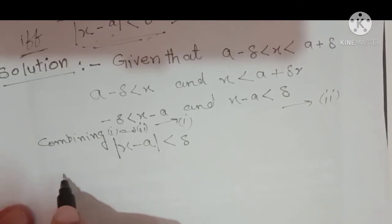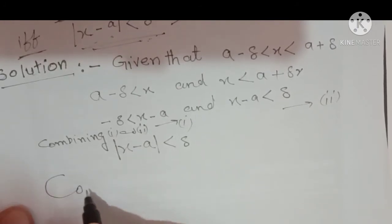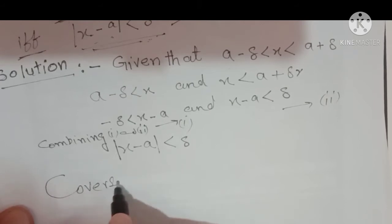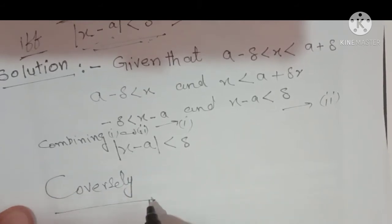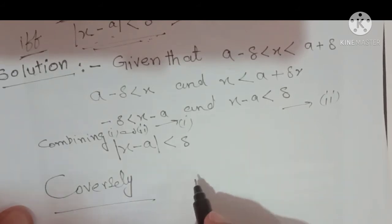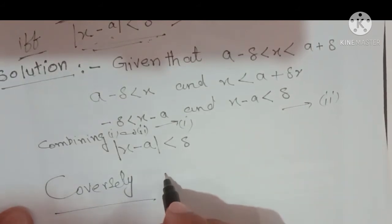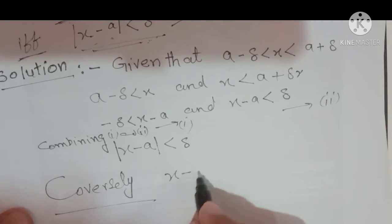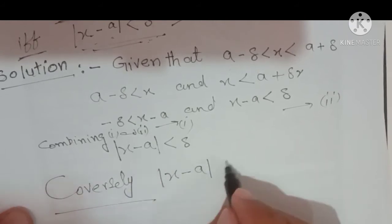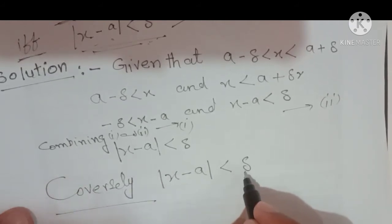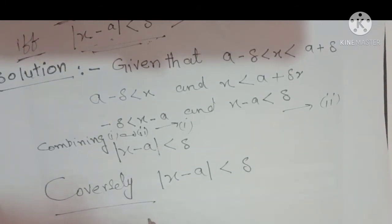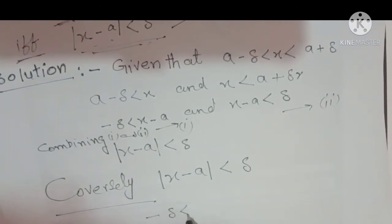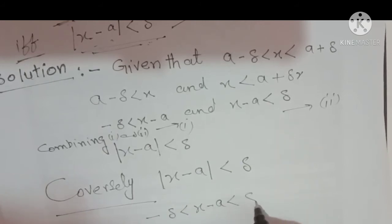Now we prove the second part — the converse. Conversely, we are given |x minus a| < delta. We separate this absolute value inequality, which becomes: minus delta < x minus a < delta.